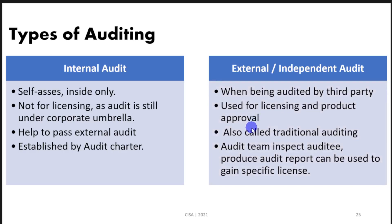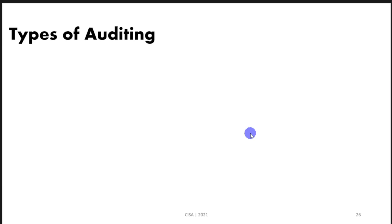The external independent audit is when you are being audited by a third party. It can be used for licensing and product approval. It is also called the traditional auditing. In an external or independent audit, the audit team inspects the auditee's processes and assets and produces audit reports that can be used to gain a specific license.